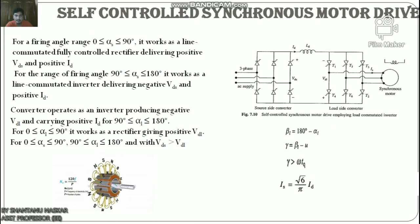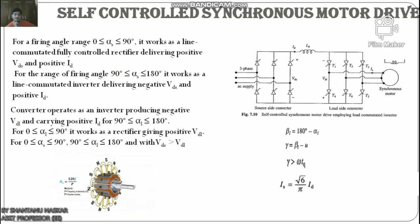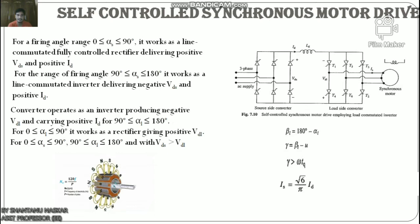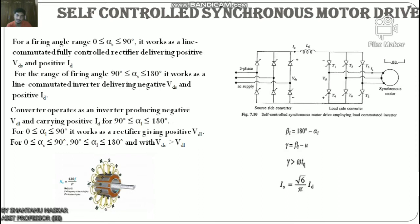The load-side converter and the current source inverter perform essentially the same function; the only difference is that the former uses load commutation and the latter uses force commutation. Load commutation has several advantages: it does not require a commutation circuit, frequency of operation can be higher, and it can operate at power levels beyond the capability of force commutation. The load-side converter performs a function similar to the commutator in a DC machine. The combination of the load-side converter and the self-controlled synchronous motor functions similarly to a DC machine — it is fed from a DC supply, and like a DC machine, the stator and rotor fields remain stationary with respect to each other at all speeds. This drive is therefore known as a commutatorless DC machine.